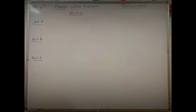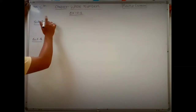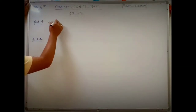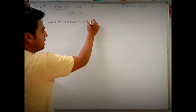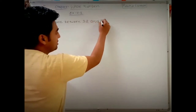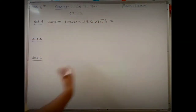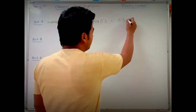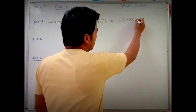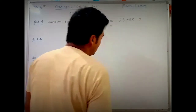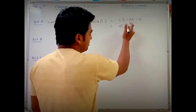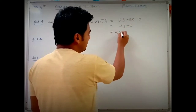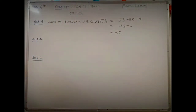So, numbers between 32 and 53 equals 53 minus 32 minus 1. That is 21 minus 1, which equals 20. There are 20 numbers between 32 and 53. Keep this in mind, otherwise you may commit a mistake in an examination.